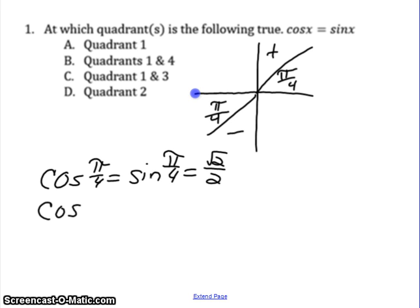And the cosine of 5 pi over 4 is equal to the sine of 5 pi over 4.